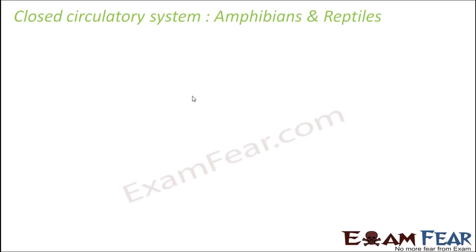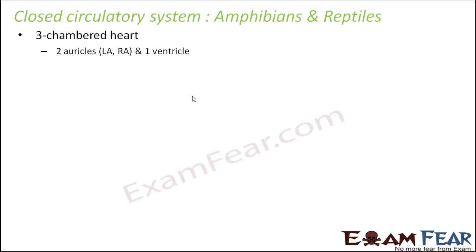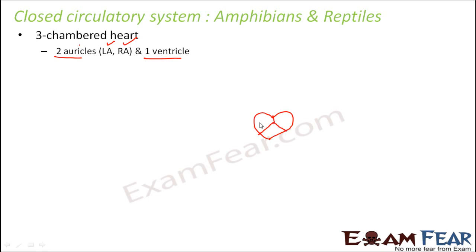Now let us look at the circulatory system of amphibians and reptiles. They have a three-chambered heart — instead of one auricle and one ventricle, they have two auricles and one ventricle: a left auricle and a right auricle, depending on which side the auricle is located. Both auricles are receiving chambers and the ventricle is the pumping chamber that gives out blood.